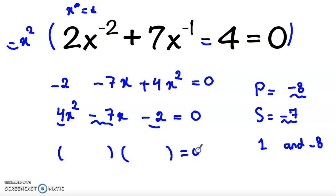Now because here we have 4 x square, we will write 4 x and 4 x here, plus 1 and minus 8 equal to 0.